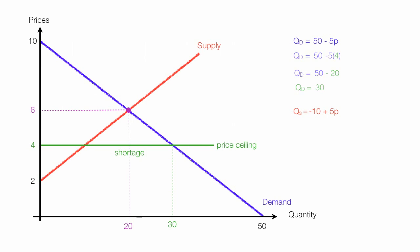Now I take 4, the price, and put it into the quantity supplied equation, which gives me quantity supplied is equal to negative 10 plus 5 times 4. So quantity supplied equals negative 10 plus 20, which means quantity supplied is equal to 10.